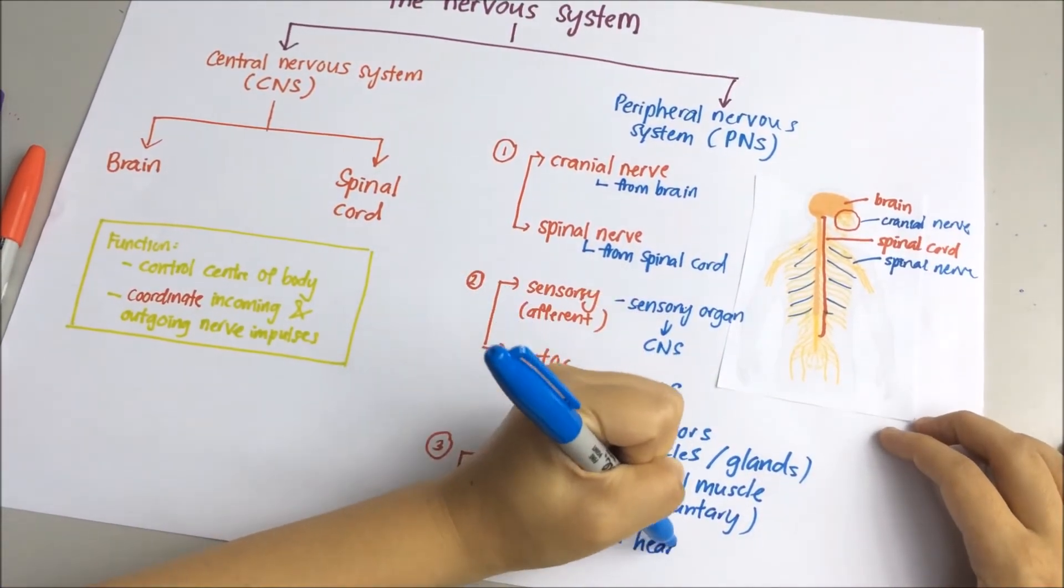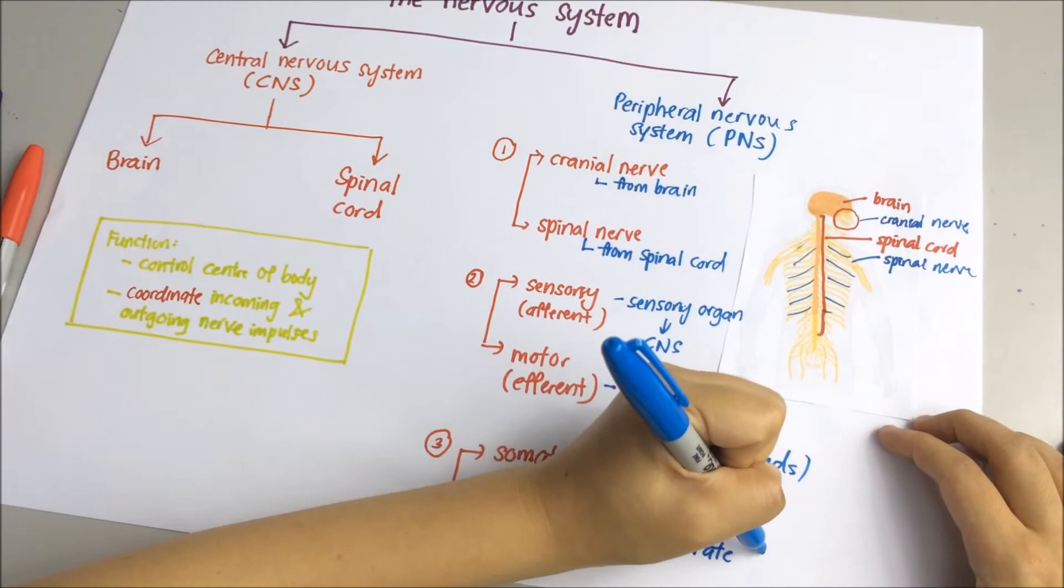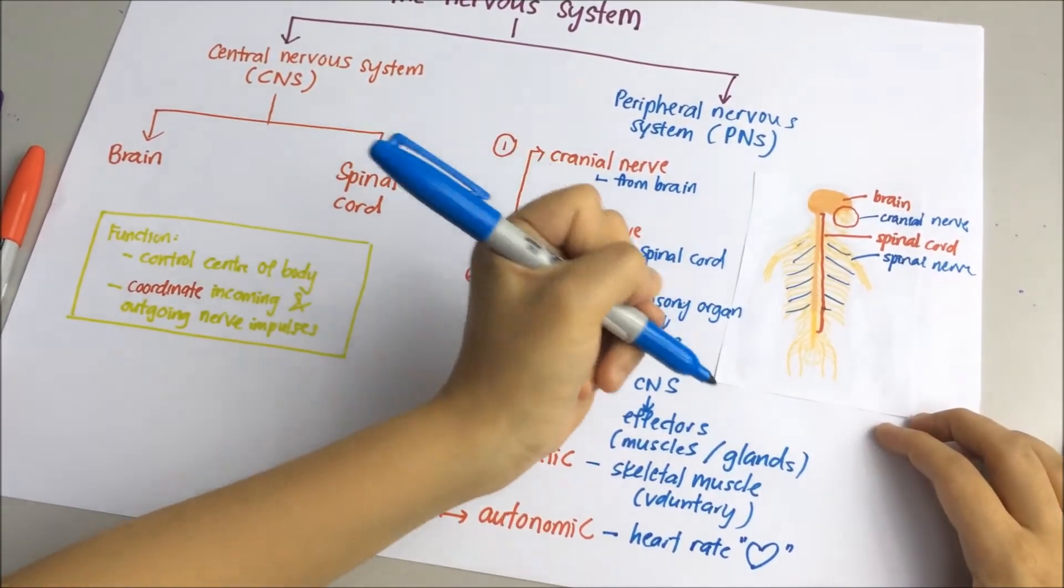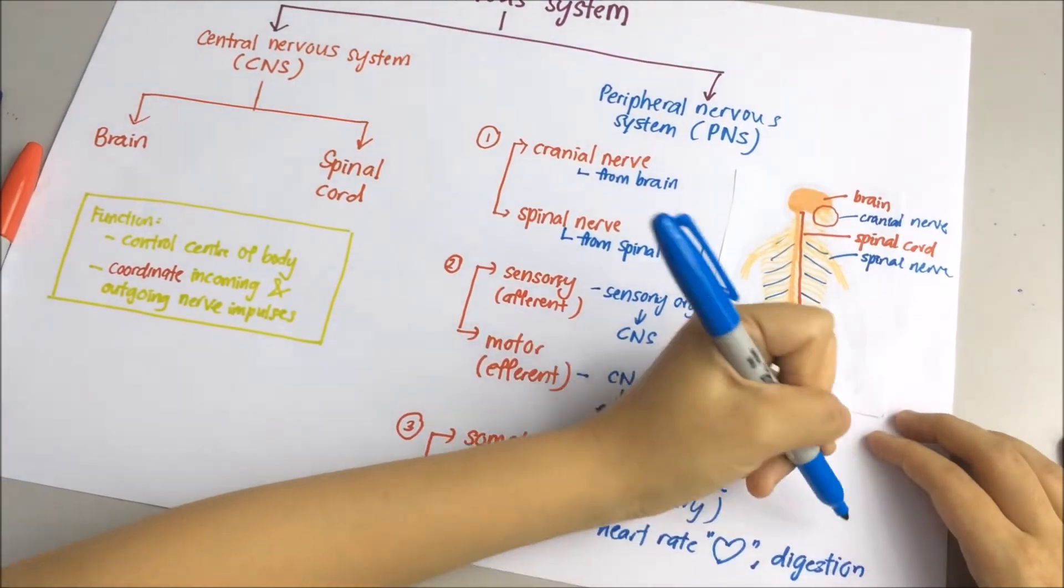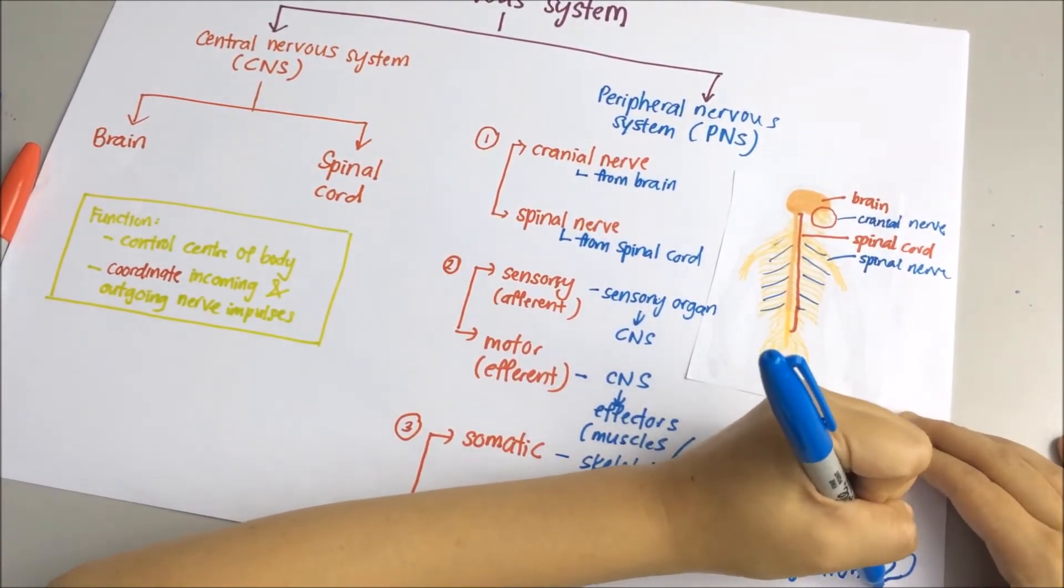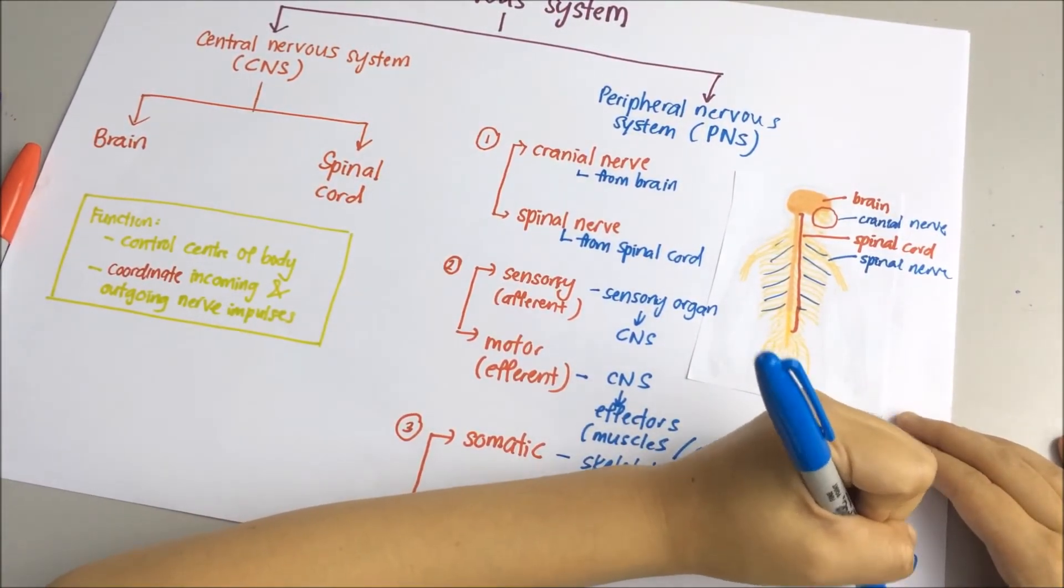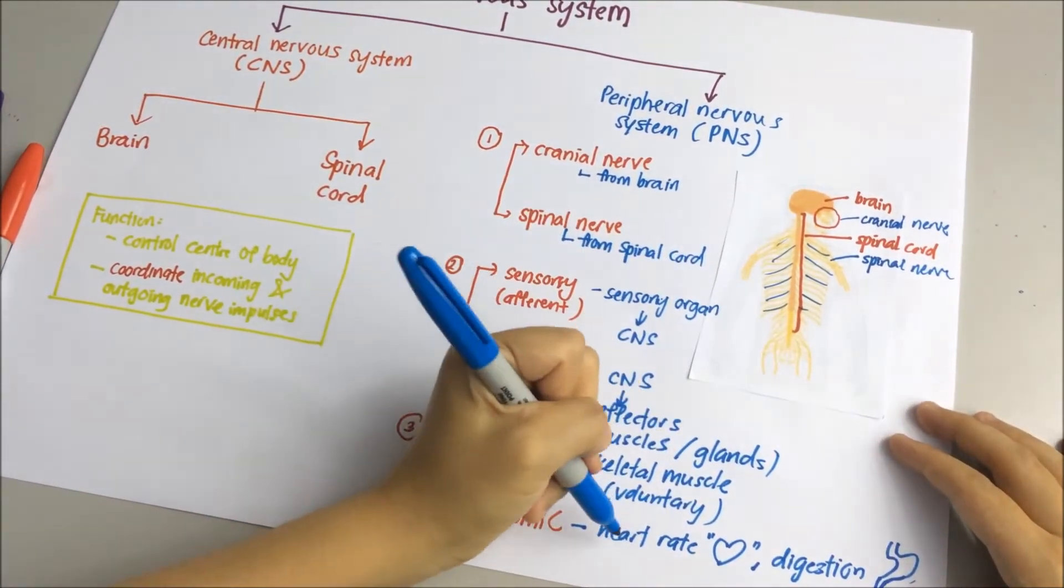While the autonomic nervous system controls system that you don't have to think about, which we call it as involuntary processes such as your heart rate, digestion and perspiration, which means sweating.